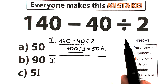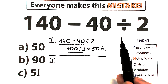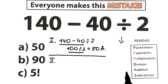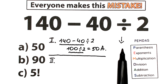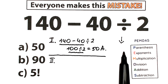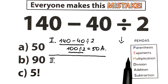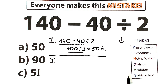PEMDAS works from the top to the bottom: parentheses have the highest priority, and addition and subtraction have the lowest priority. First we evaluate parentheses — the expression inside parentheses — then exponents like squares and cubes, then the multiplication and division group, and then the addition and subtraction group.